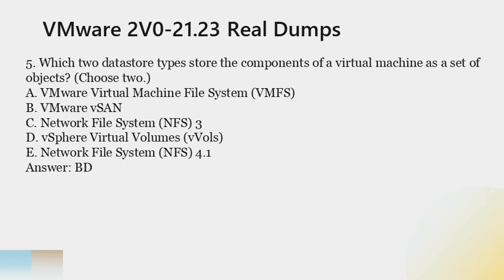Question 5. Which two datastore types store the components of a virtual machine as a set of objects? Choose two. A. VMware Virtual Machine File System (VMFS). B. VMware vSAN. C. Network File System (NFS). D. vSphere Virtual Volumes (vVols). E. Network File System NFS 4.1. Answer: B, D.